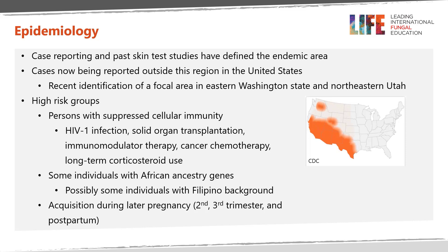In the past, case reports and skin test studies have defined the endemic area. There has been recent identification of endemicity in eastern Washington and northeastern Utah. High-risk groups include persons with suppressed cellular immunity, including HIV-1 infection, solid organ transplantation, immunomodulator therapy, cancer chemotherapy, and long-term corticosteroid use. Some individuals with African ancestry genes appear to be at high risk for severe and disseminated disease, and that may also apply to those with Filipino background. Although infection is less severe in women and young persons, acquisition during the second trimester and later in pregnant women may lead to severe and disseminated disease.